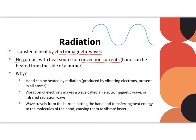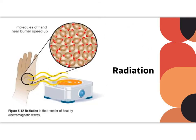So we could hold our hand to the absolute side of it and still feel heat. So that is not conduction because our hand is not on the burner. It's not convection because our hand is not above the burner. We are experiencing radiation. Let's take a look at the diagram. So our hand can be heated again by radiation. This is produced by vibrating electrons, which are present in all atoms.